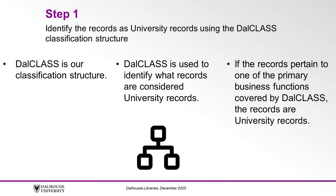Step 1: Identify the records as university records using the Dal class classification structure. Here at Dalhousie University, Dal class is our classification structure. We use Dal class to identify what records are considered university records. When dealing with records, refer to the Dal class framework. If the records pertain to one of the primary business functions covered by Dal class, the records are university records.